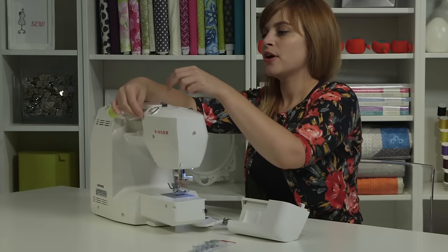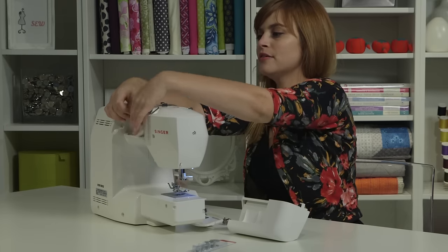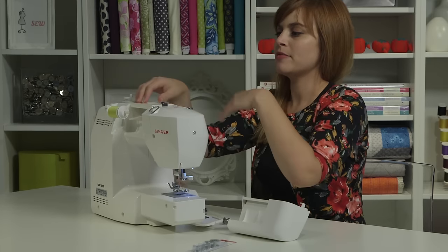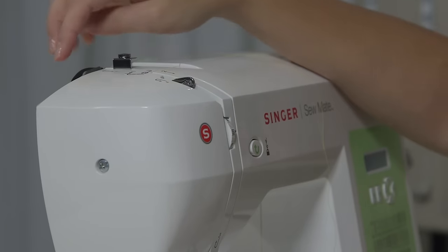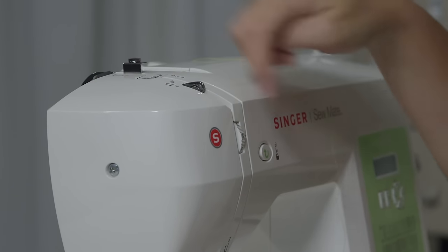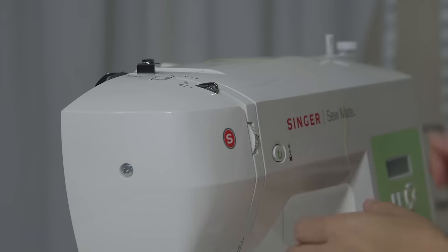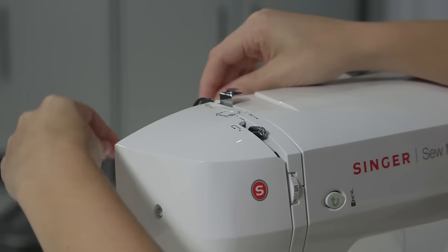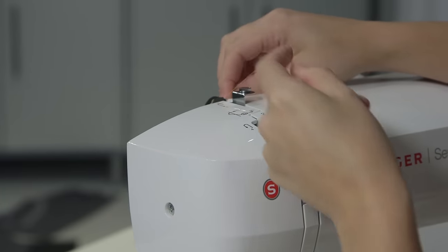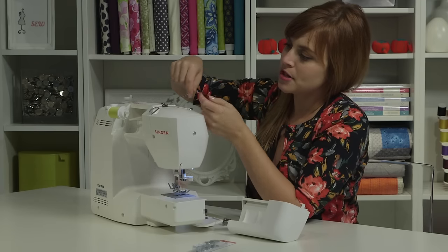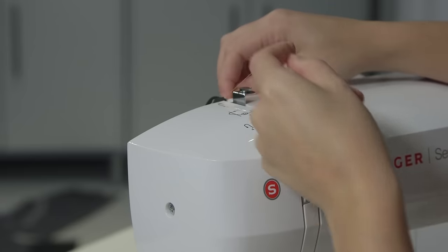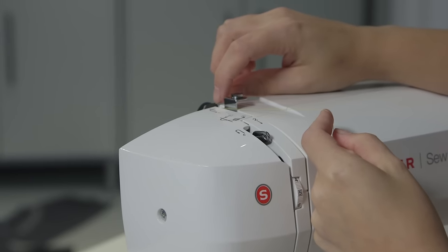When we thread for sewing for the upper thread, let me just unthread the thread from the bobbin winding. Again, we're going to follow the diagrams that are listed and the numbers that show you the sequence of where to go. So the first stop is that pre-tension part right here, and again, it's very important to make sure that you get the thread in between the two sides of that part right there.